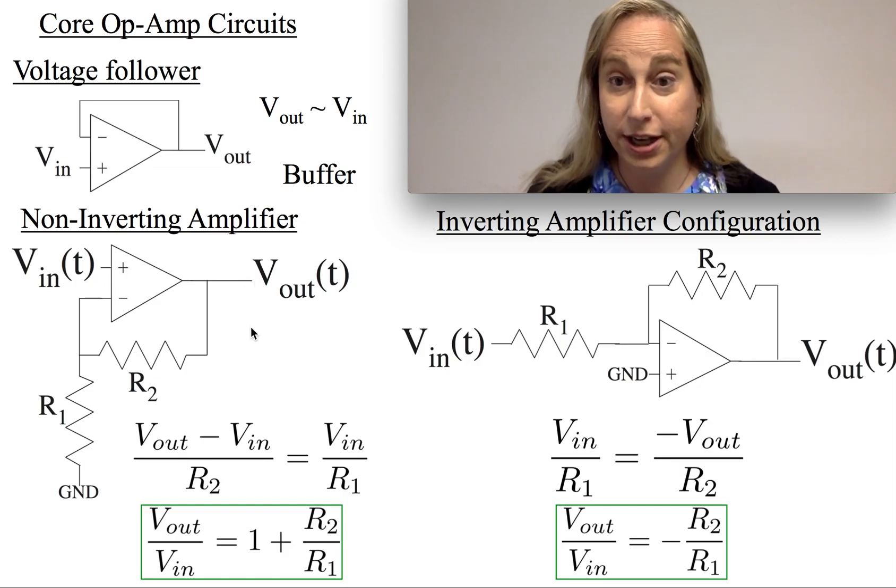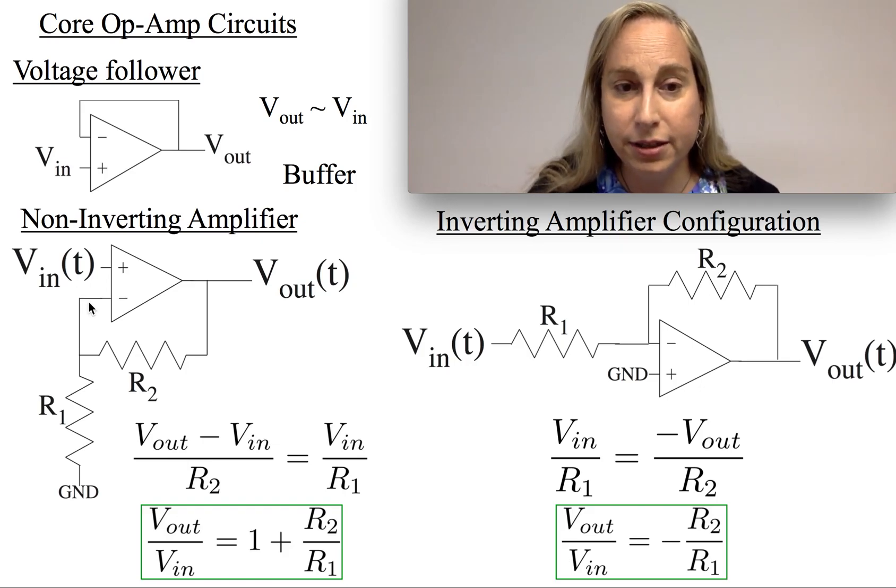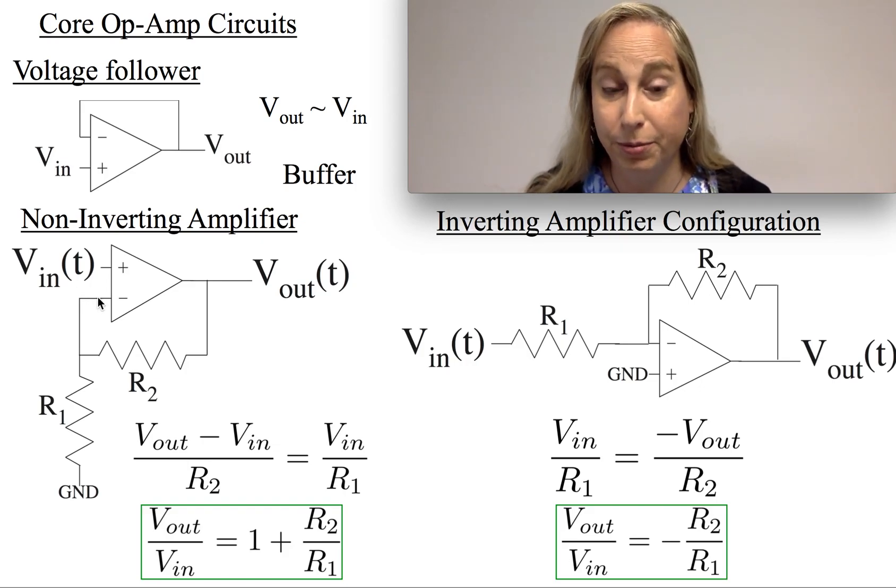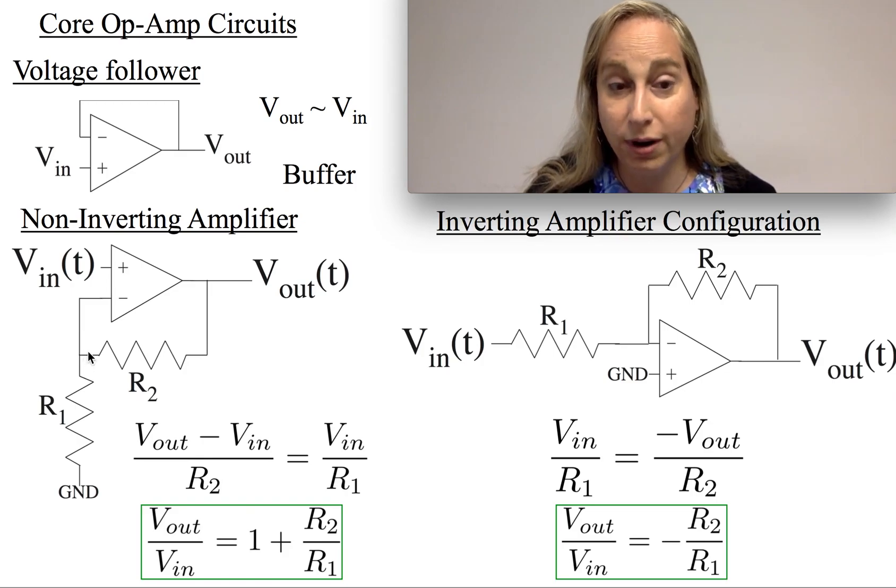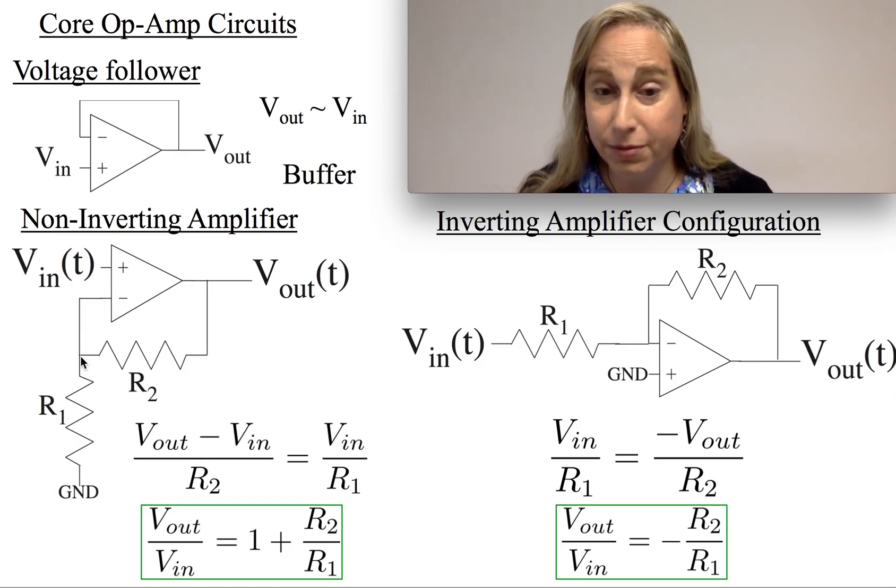Again, to make sure the output voltage is inside the power supply rails, I'm going to expect that this input voltage is going to need to be close to what the minus terminal will be. As a result, I can start to write a very simple KCL and say that this node is roughly Vin, so I'm just going to proxy and say it's the input voltage.